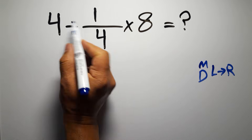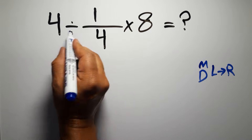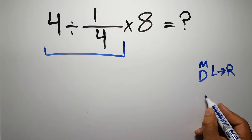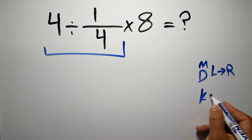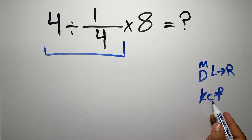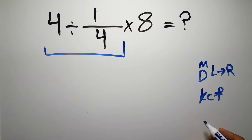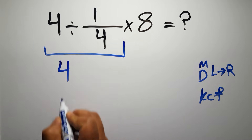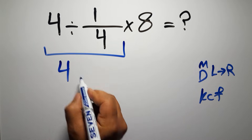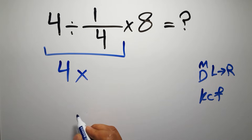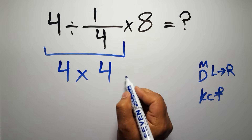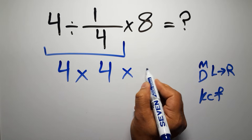So first this division: 4 divided by 1 over 4. According to the KCF rule — K stands for keep, C stands for change, and F stands for flip — we can write: keep the first fraction, change division to multiplication, and flip the second fraction. And here we have times 8.